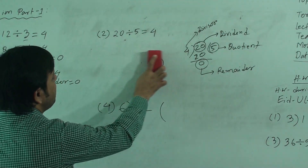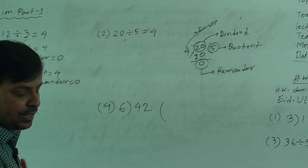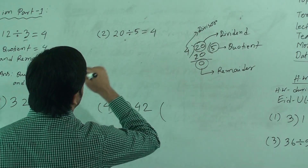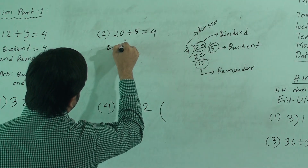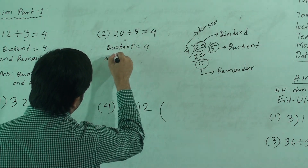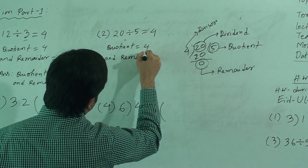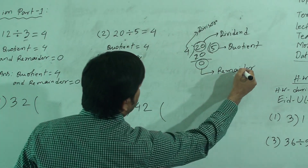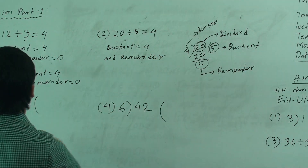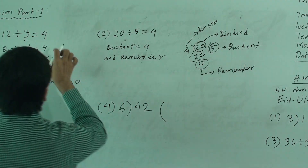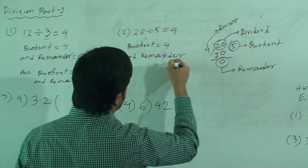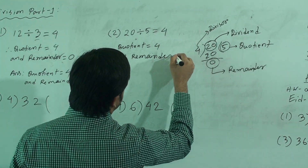Since 5 4s are 20, the quotient is 4. It means we can divide 20 by 5 four times. So, quotient equal to 4 and remainder equal to 0.